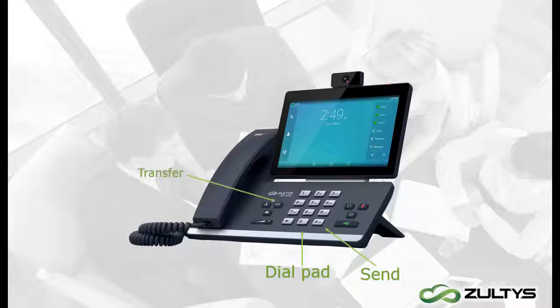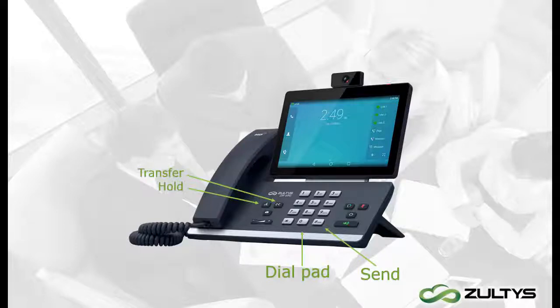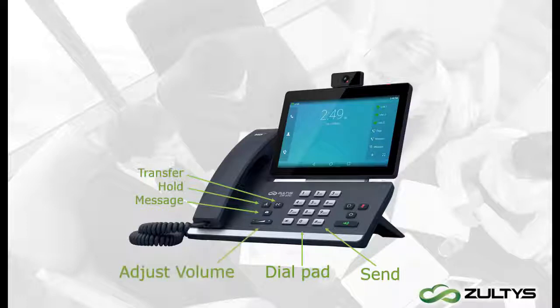Further on the left we have a dedicated transfer button, which we will see in action later in the video. Then there is the button for placing calls on hold — to remove a call from hold, press the button a second time. The hold and transfer functions are also available as buttons you can tap on the display while on an active call. Below is the voice messaging button, which you can click to access your voice messages. And lastly you can click this button to adjust the volume.